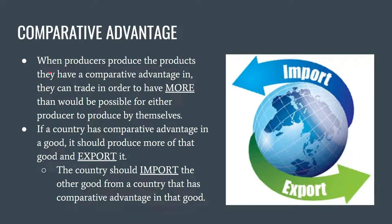The reason this is so important is that it helps countries decide what to create in order to export and what goods and services they need to import from trade partners. If a country has a comparative advantage in producing a good, they should focus production on that good, export the excess, and import the things they gave up producing. They will end up with a higher combination of both goods than if they had tried to produce everything on their own.